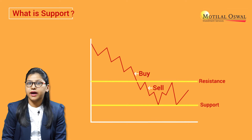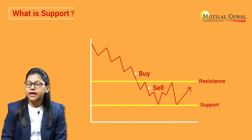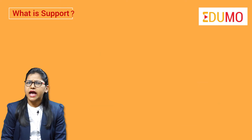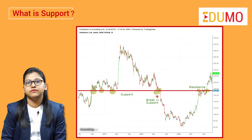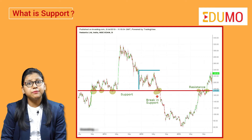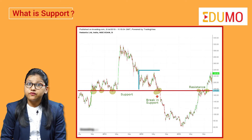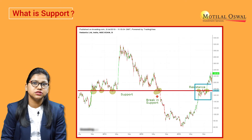So if the prices bounce back from the support level, the buyer may enter the trade and take a long position. As you see on the screen, from the daily chart of Vedanta, how the level of 175 is an important level. The prices have fallen down and bounced back from that level two to three times. Now after the break in support level, we can see how it has become new resistance for the stock.